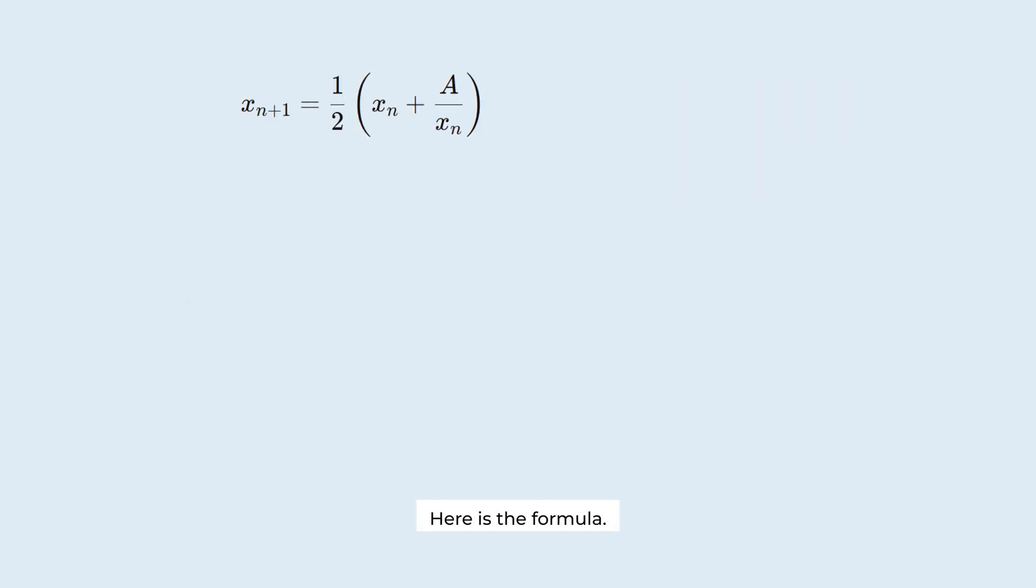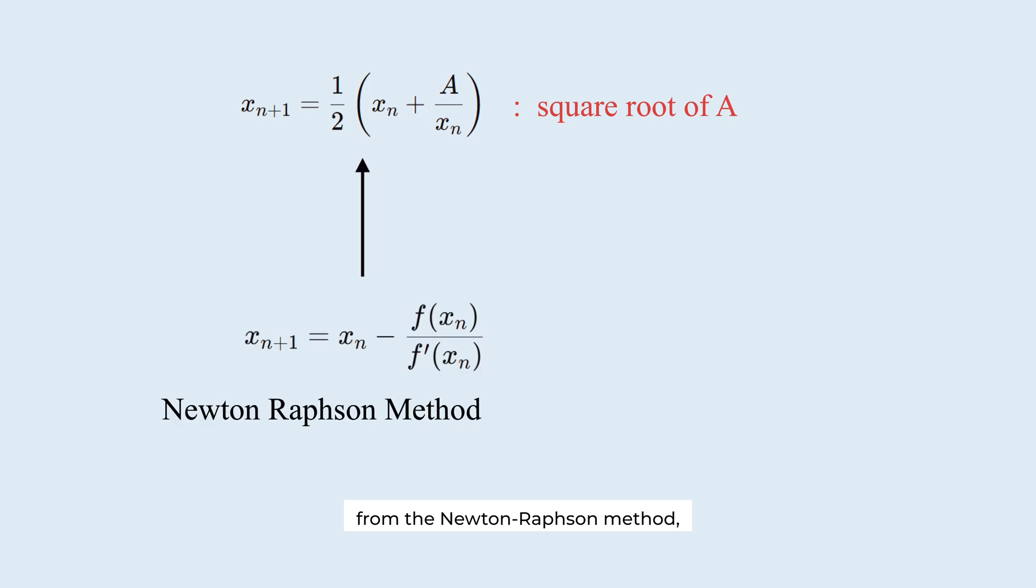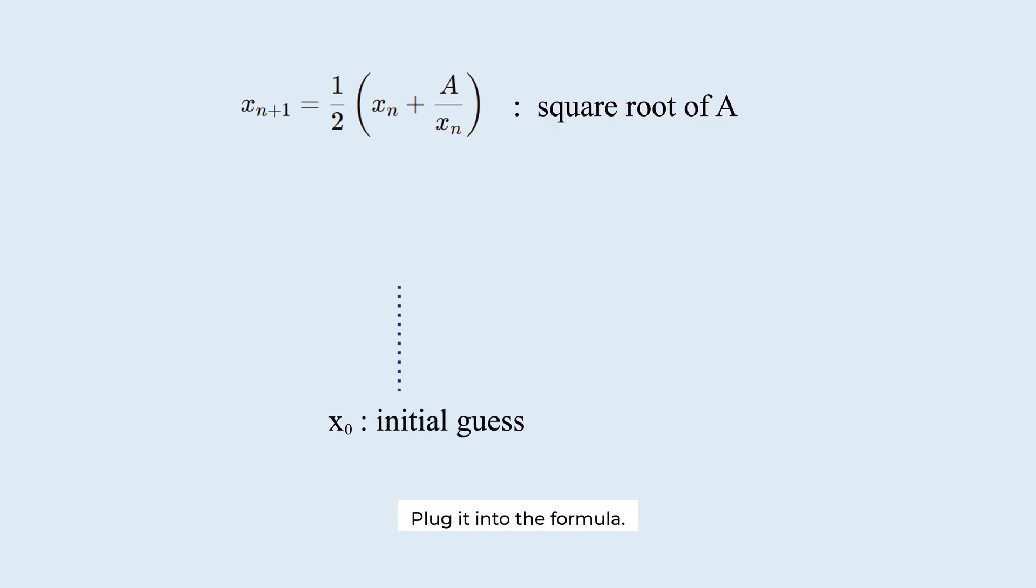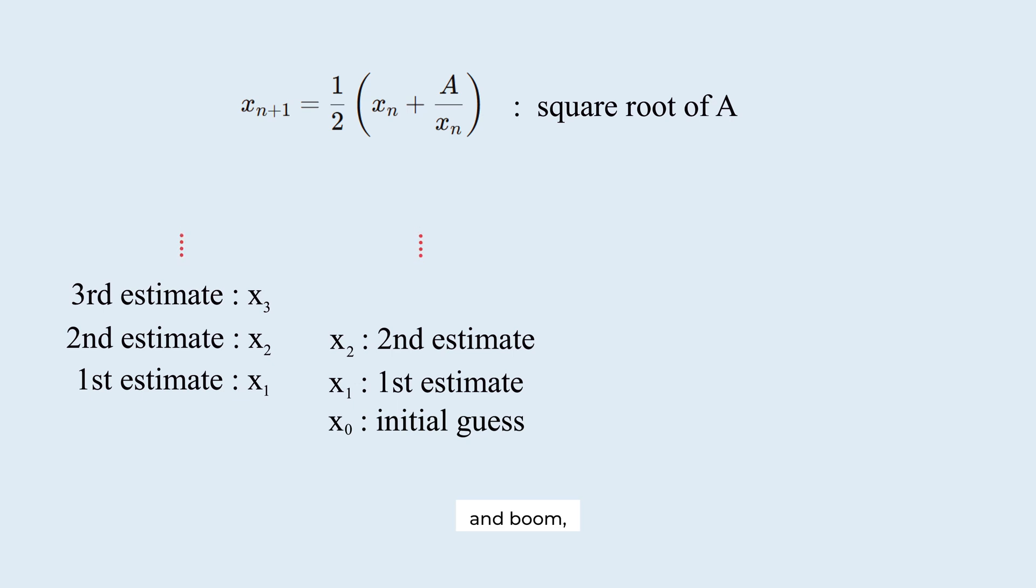Here is the formula. It gives you better and better approximations of the square root of any number A. It is derived from the Newton-Raphson method, which is an effective way to approximate solutions to equations. Start with a guess. Plug it into the formula. Get a new estimate. Repeat a few times. And boom, you've got a pretty accurate square root.